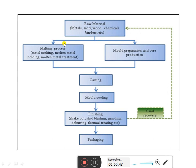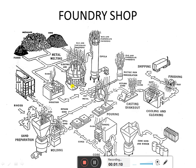These are all casting materials. The processes involved in the foundry are: raw material preparation, melting process, mold preparation, core preparation, casting preparation, mold cooling, finishing, and packaging. From this process, the sand can be recovered and sent back to the raw material stage. These are the simple processes involved in the foundry.